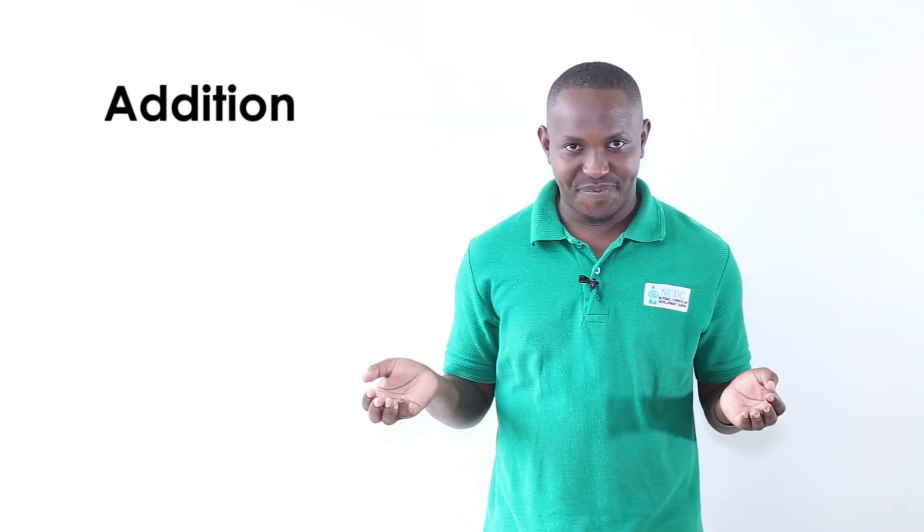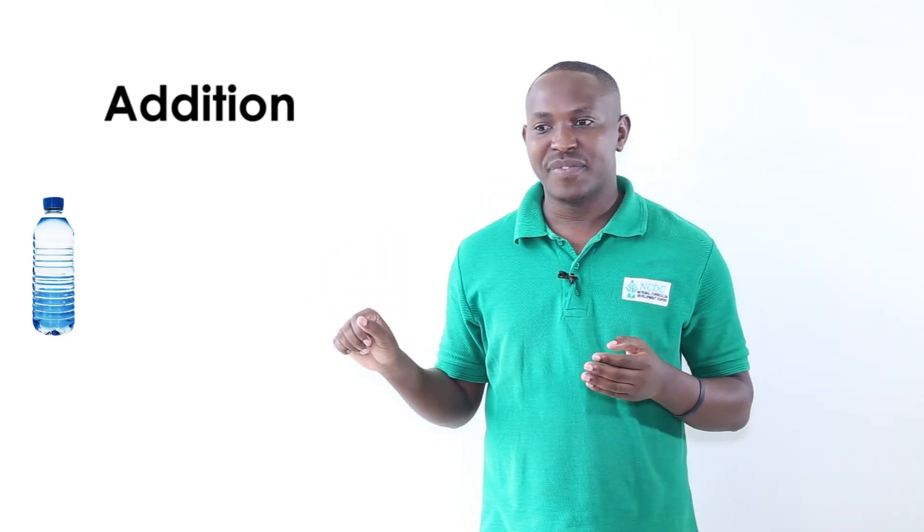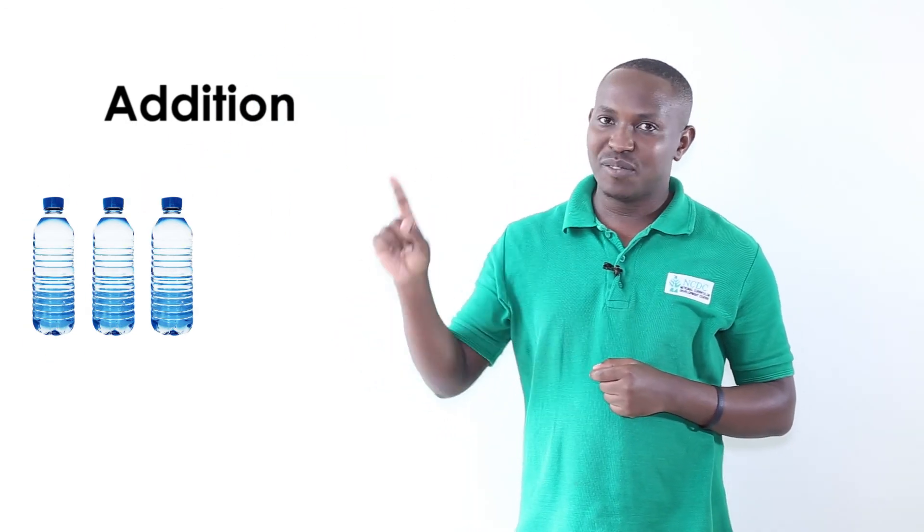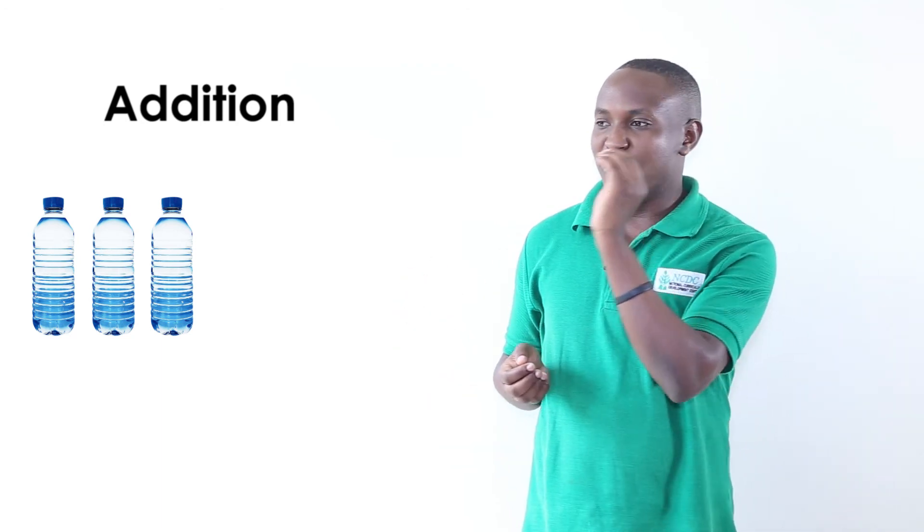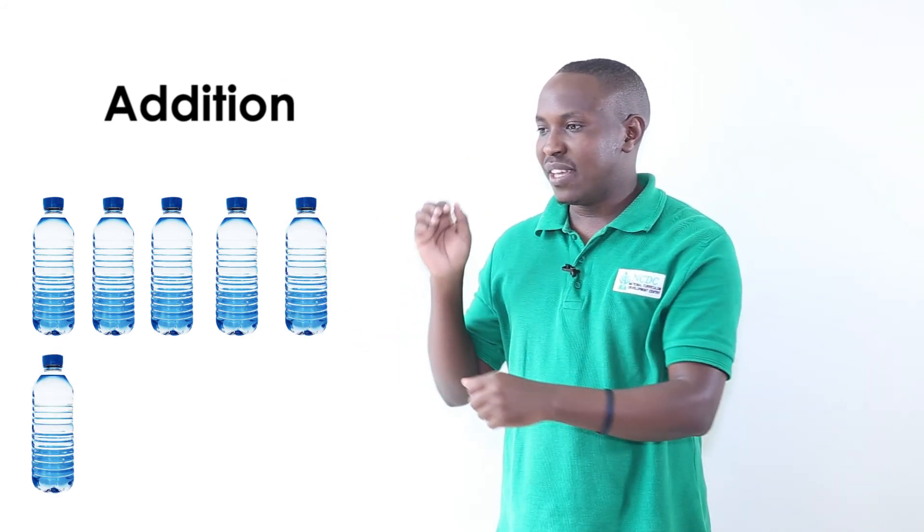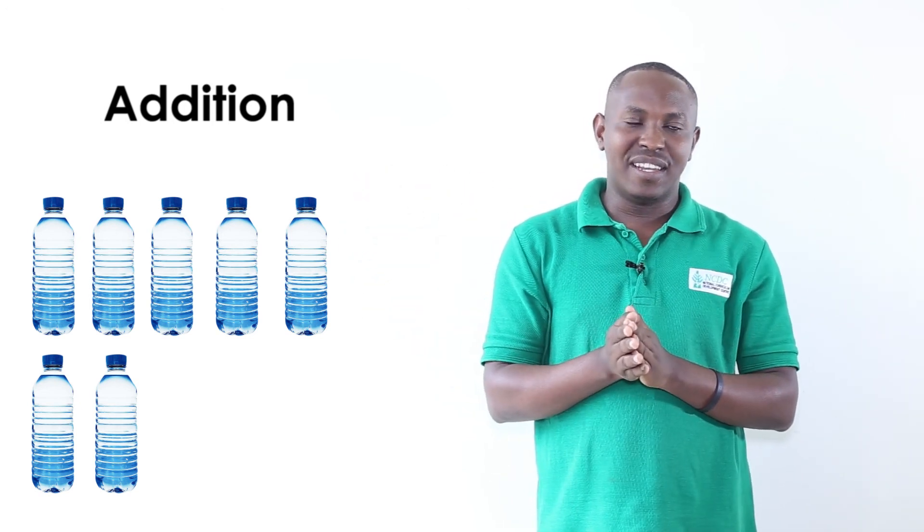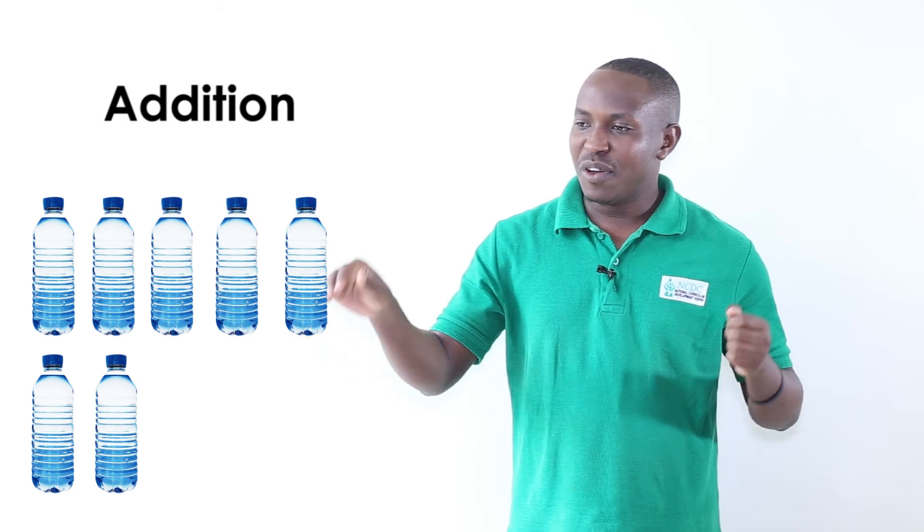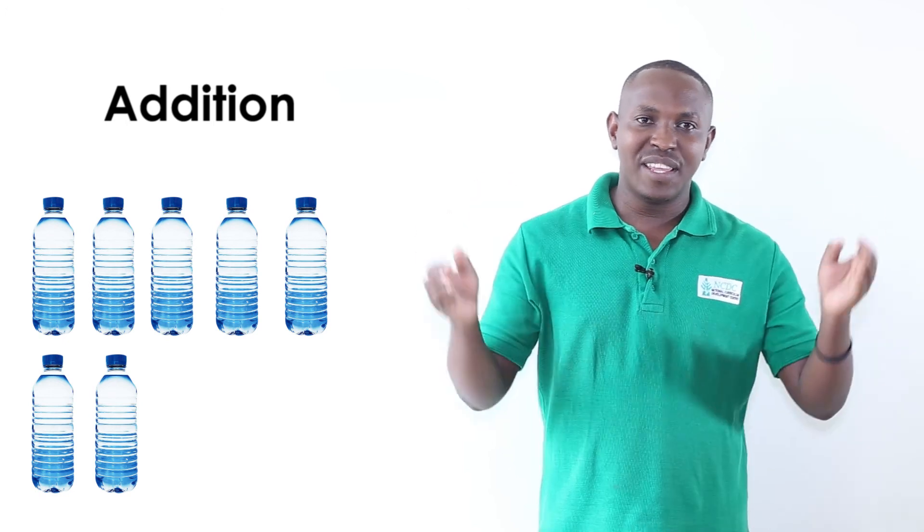Let's try this together. We are going to add bottles. Here is one bottle, another bottle, another bottle. One, two, three. There are three bottles. We want to add there other bottles. Other three bottles. One, two, three, four, five, six, seven. There are seven bottles.